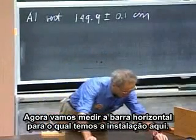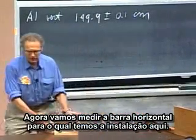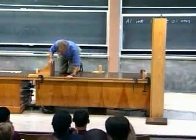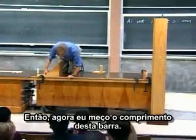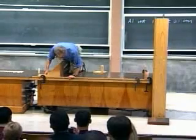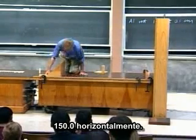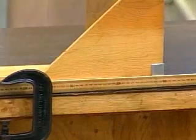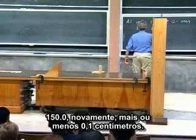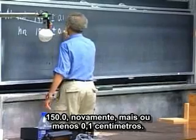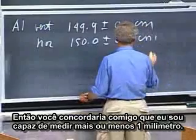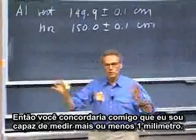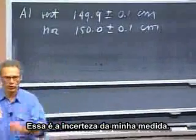Now we're going to measure the bar horizontally, for which we have a setup here. The scale is on your side. So now I measure the length of this bar: 150.0 horizontally. 150.0, plus or minus 0.1 centimeter. So you would agree with me that I am capable of measuring plus or minus one millimeter — that's the uncertainty of my measurement.